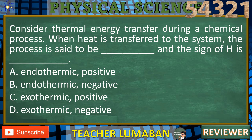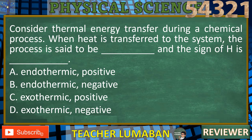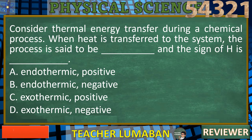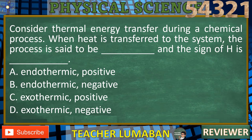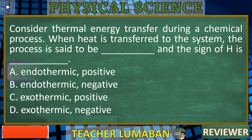When heat is transferred to the system during a chemical process, the process is said to be endothermic because the system absorbs heat from its surroundings. In such cases, the enthalpy change, delta H, of the system is positive because the system gains energy. Therefore, the correct answer is A. Endothermic, positive.